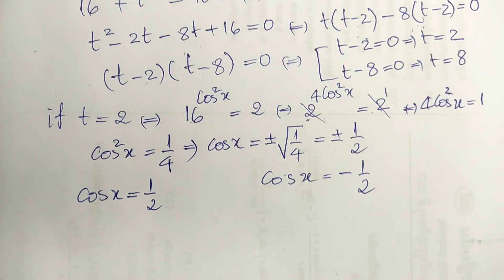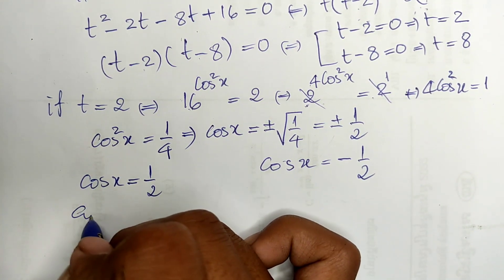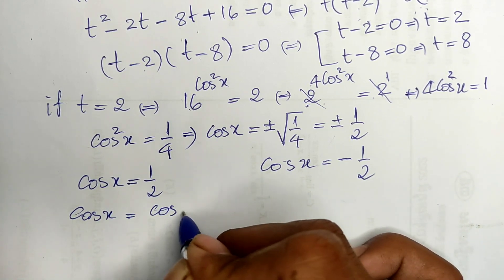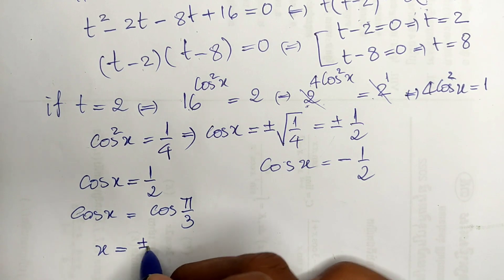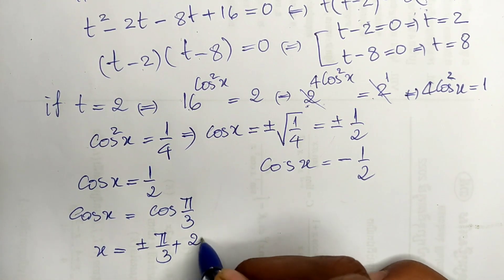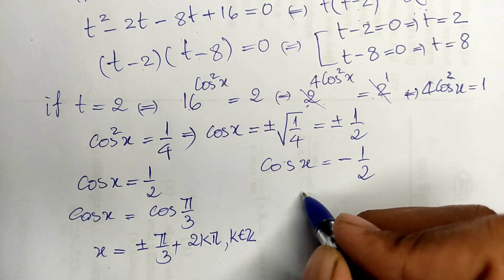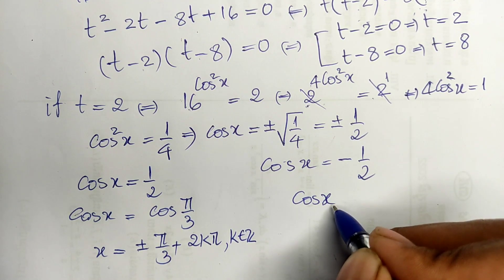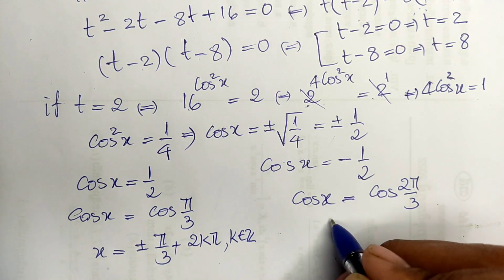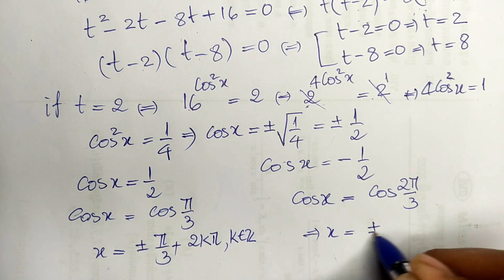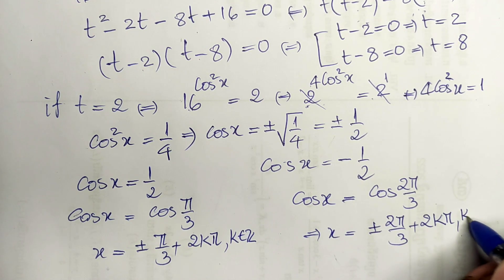This gives two solutions. For cosine of h equals 1 over 2, we write cosine of h equals cosine of pi over 3, so h equals plus or minus pi over 3 plus 2k pi, where k is an integer. For cosine of h equals minus 1 over 2, we write cosine of h equals cosine of 2 pi over 3, so h equals plus or minus 2 pi over 3 plus 2k pi, where k is an integer.